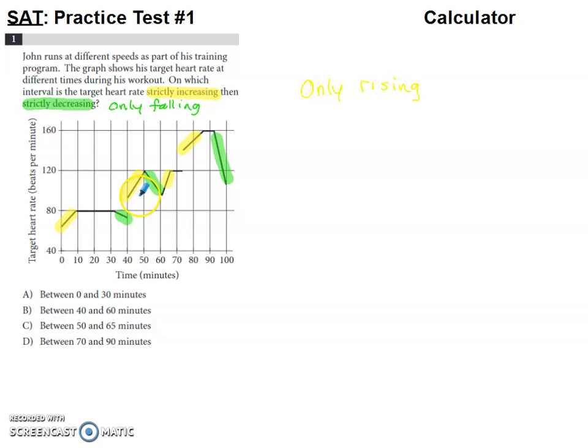So we can see the heart rate is kind of rising, leveling off, rising, falling, doing some different things. It's saying that John is running at different speeds, which kind of explains the reason for the change in heart rate. A graph shows target heart rate at different times during the workout.